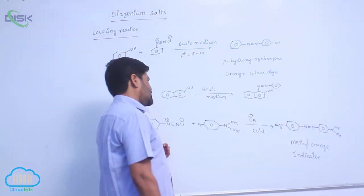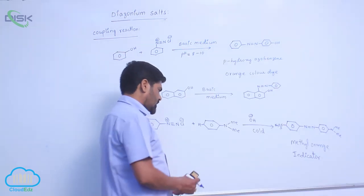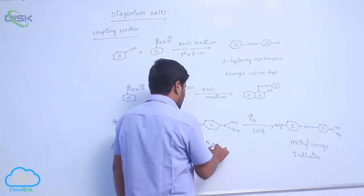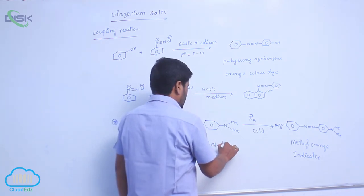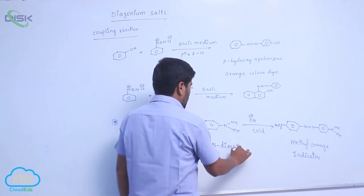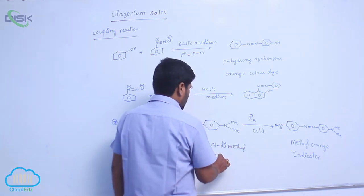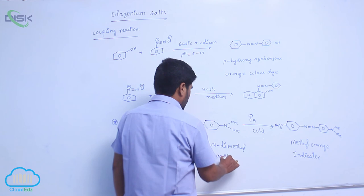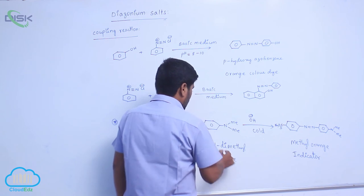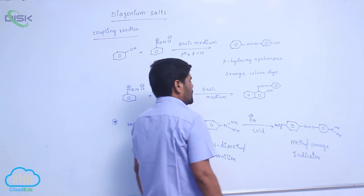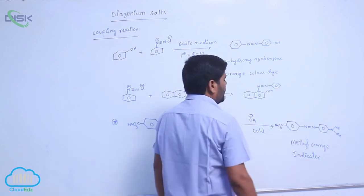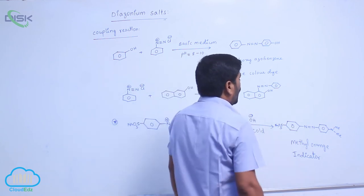Benzene diazonium chloride reacts with N,N-dimethyl aniline in presence of basic medium to form methyl orange.